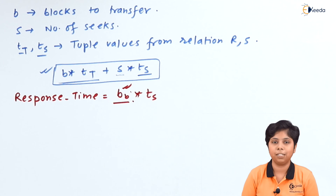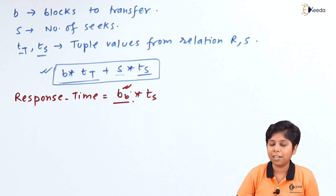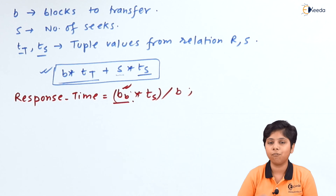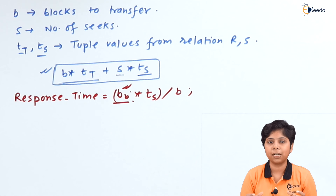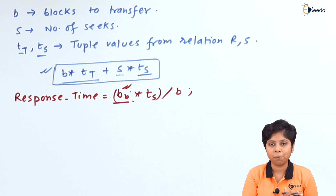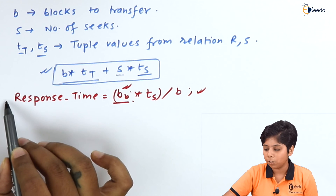Buffer blocks multiplied by the number of tuples — a buffer block may hold 5 tuples for one relation or 100 tuples for another, depending on its size. This is divided by b, the blocks holding actual data. So the response time formula is: (bb × t_S) / b — buffer blocks for holding tuples of data divided by the number of blocks storing data on disk. Optimization calculates which selection and projection choices minimize response time while the execution plan runs faster.